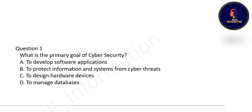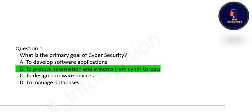Unit 3: Introduction to Cyber Security and Secure Web Browsing. We will see 30 questions for this unit. The first question: what is the primary goal of cyber security? Options are: to develop software applications, to protect information and systems from cyber threats, to design hardware devices, or to manage databases. The correct option is B — to protect information and systems from cyber threats.